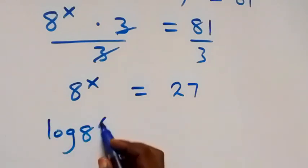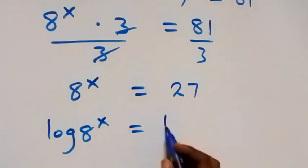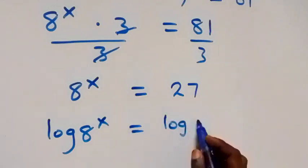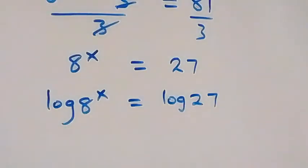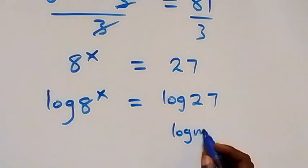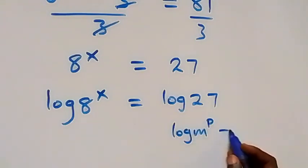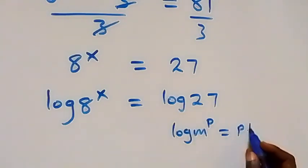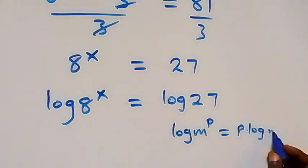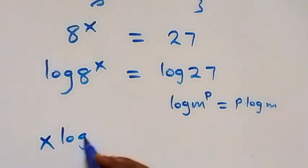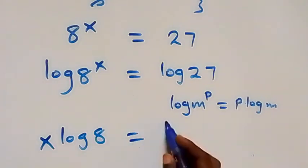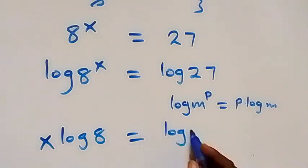Next, we apply the log on both sides. We have log of 8 raised to power x equals log 27. From the power law of logarithms, log m raised to power p equals p log m. Here x is the power, so we have x log 8 equals log 27.